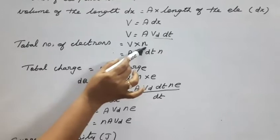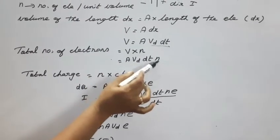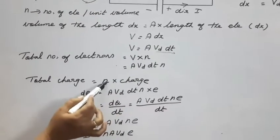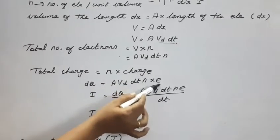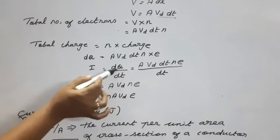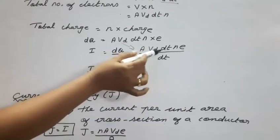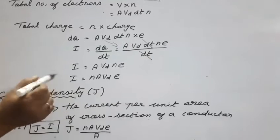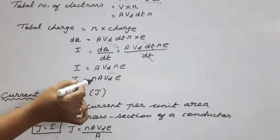The total number of electrons equals volume into n, so it is A · v_d · dt · n. The total charge dq equals number of electrons into charge e, therefore dq = A · v_d · dt · n · e. The current formula is I = dq/dt, so I = A · v_d · dt · n · e divided by dt. The dt cancels, giving I = A · v_d · n · e, which we rearrange as I = nEAv_d.